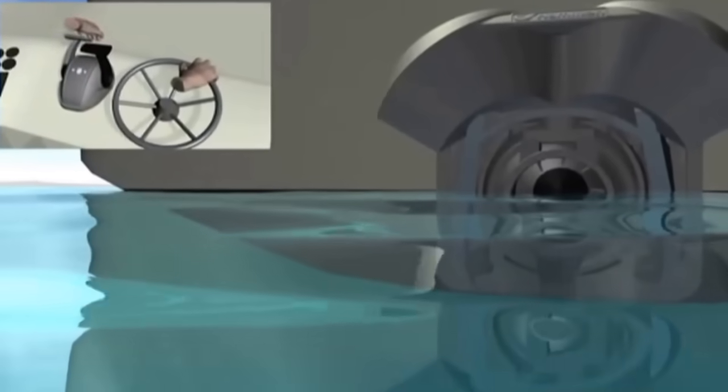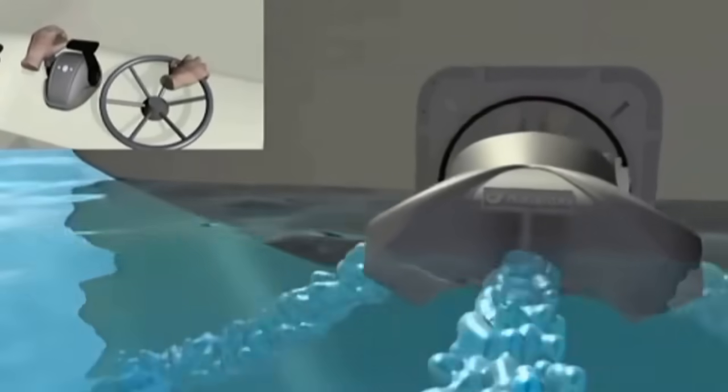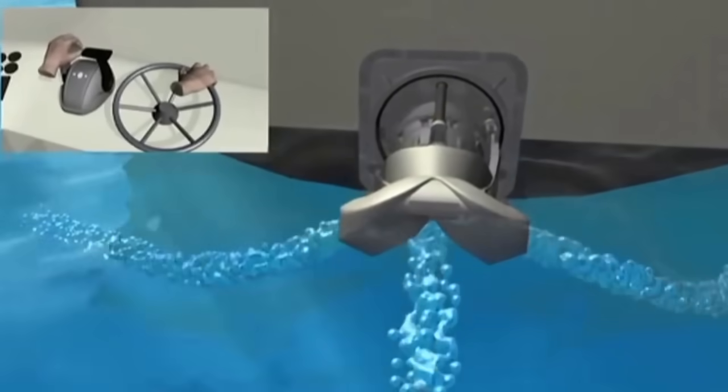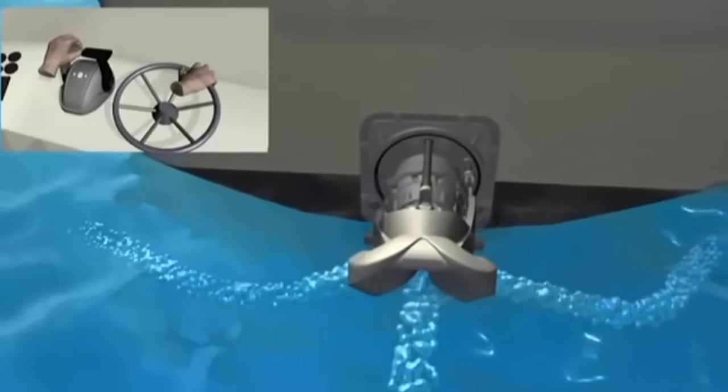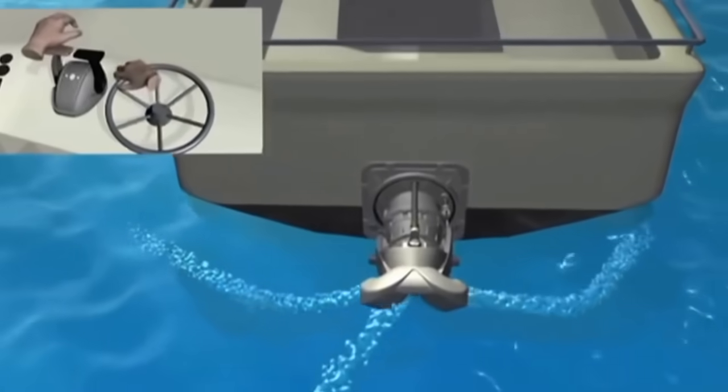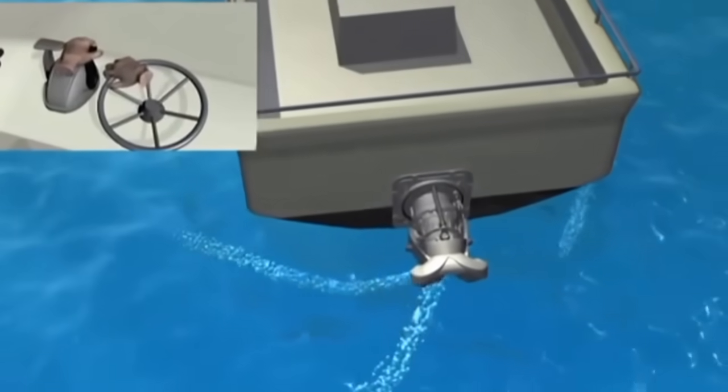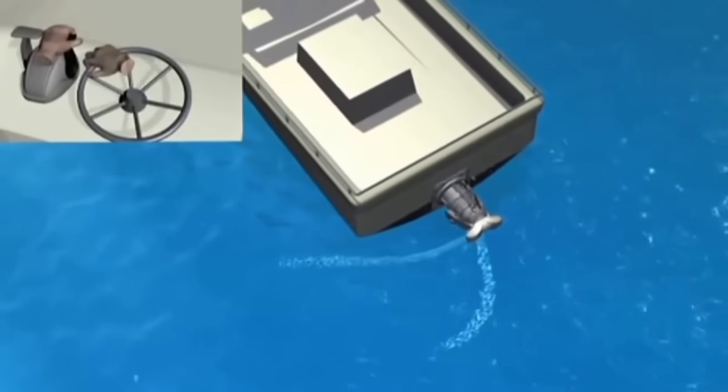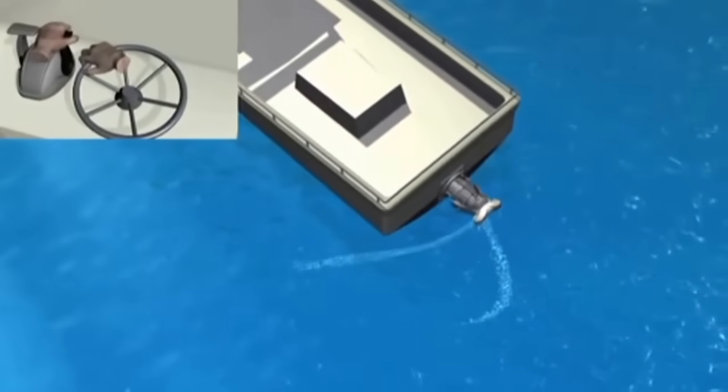The astern deflector can also be lowered to a central position, where forward and reverse thrusts are equal, so the boat is able to maintain its position regardless of the engine revs. Steering control is still available in this zero speed position, allowing the operator to fully rotate the boat without moving ahead or astern.